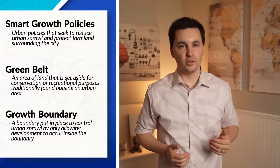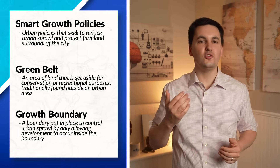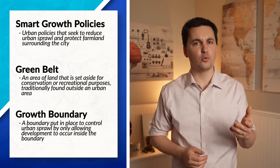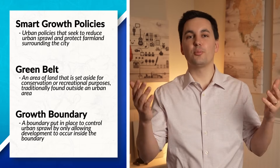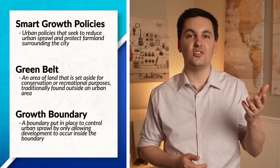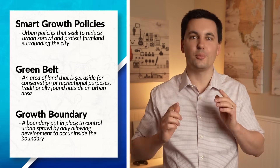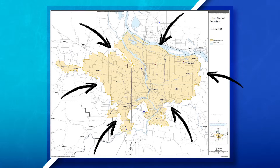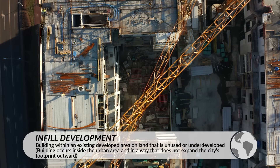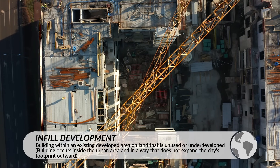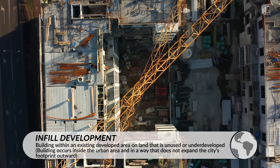Cities can respond to these challenges in a variety of ways. Cities can reduce urban sprawl by using smart growth policies, creating green belts, and implementing growth boundaries, which restrict the expansion of a city's ecological footprint and prevent urban sprawl. Urban growth boundaries often encourage infill development, which is when a city seeks to promote the development of vacant or underdeveloped land within an already developed area.